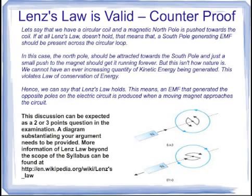If there is some law, we need to check whether it is a valid law or not. In the case of Lenz's law, we will prove it by a counter-proof method — we will first assume the opposite of the law to be true and ultimately arrive at a conclusion that the opposite does not hold, so the original law must be true. So let us assume that we have a circular coil and a magnet whose north pole is pushed towards the coil.